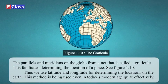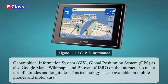Thus, we use latitude and longitude for determining locations on the earth, and this method is being used even in today's modern age quite effectively. Geographical Information System (GIS), Global Positioning System (GPS), as also Google Maps, Wikimapia, and Bhuvan of ISRO on the internet all make use of latitudes and longitudes. This technology is also available on mobile phones and motor cars.